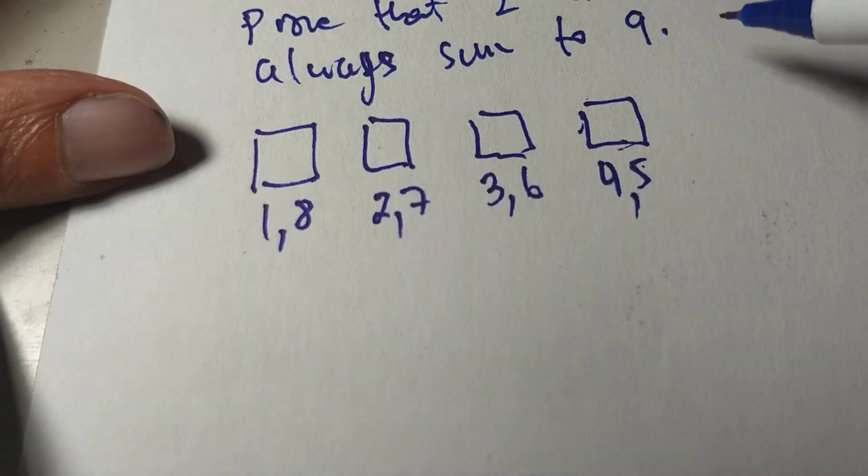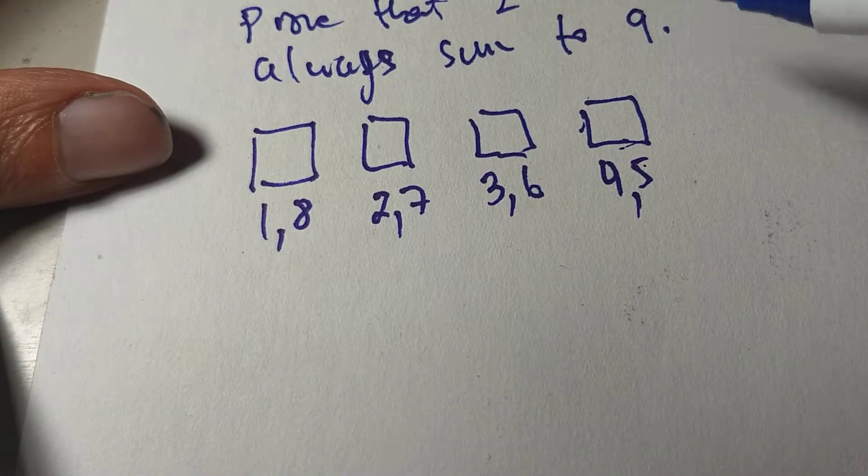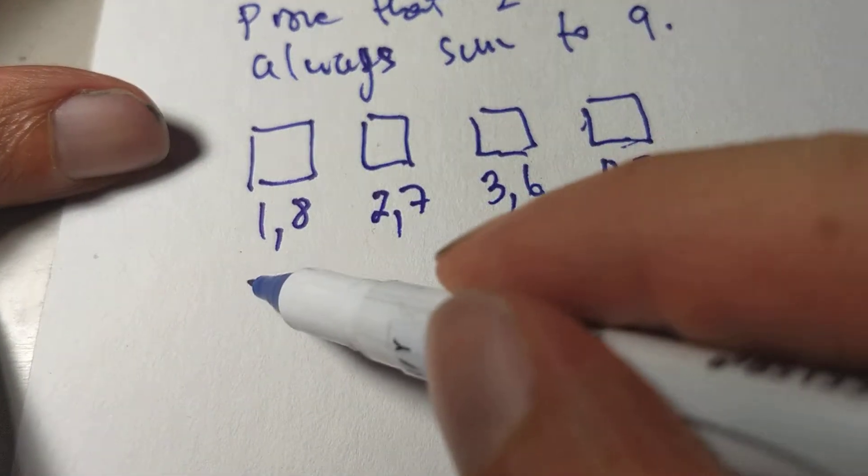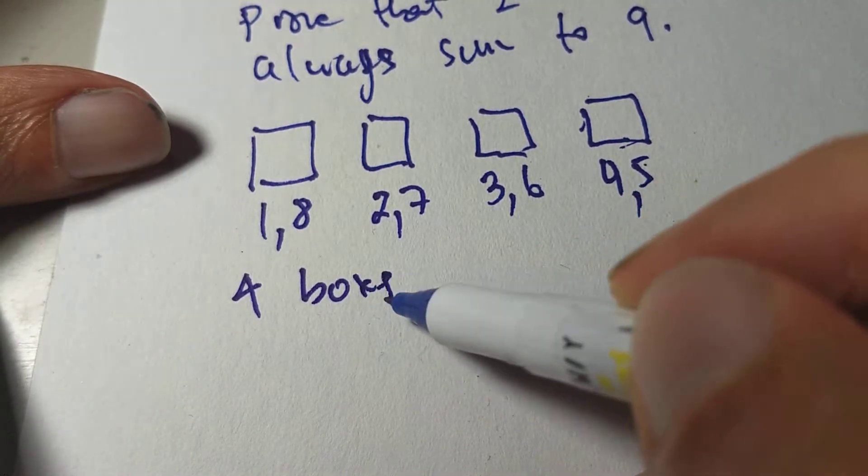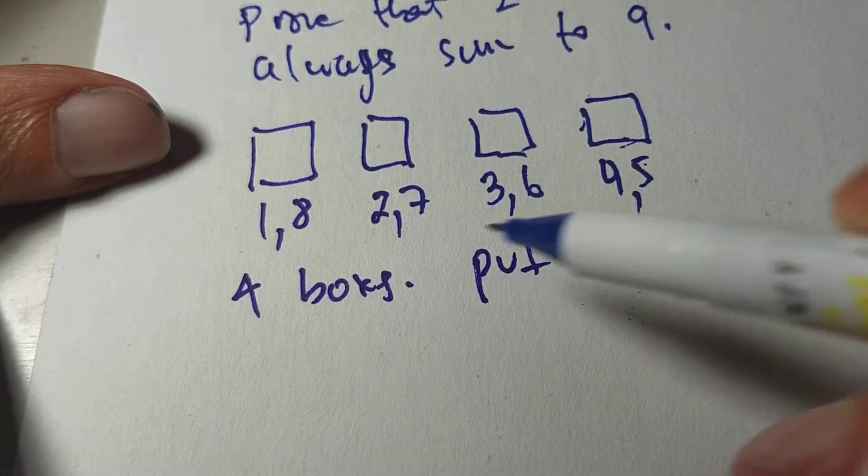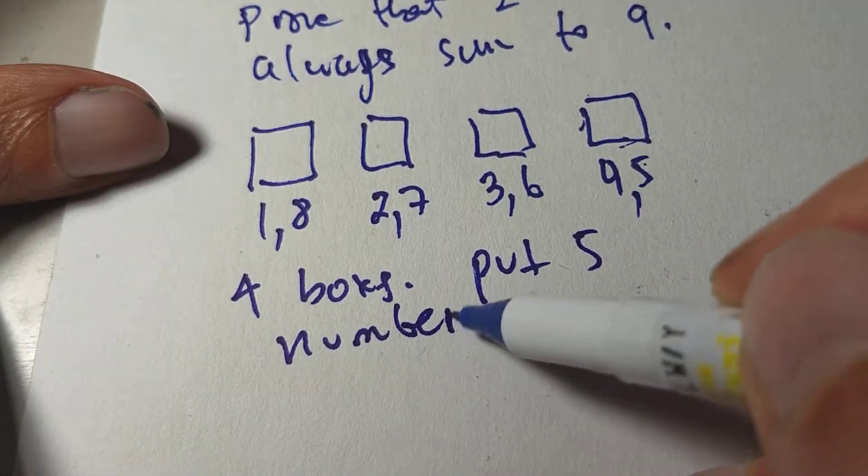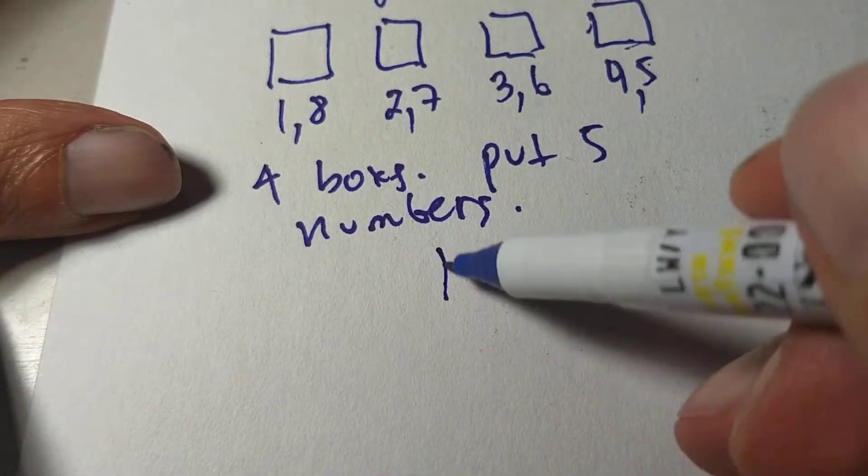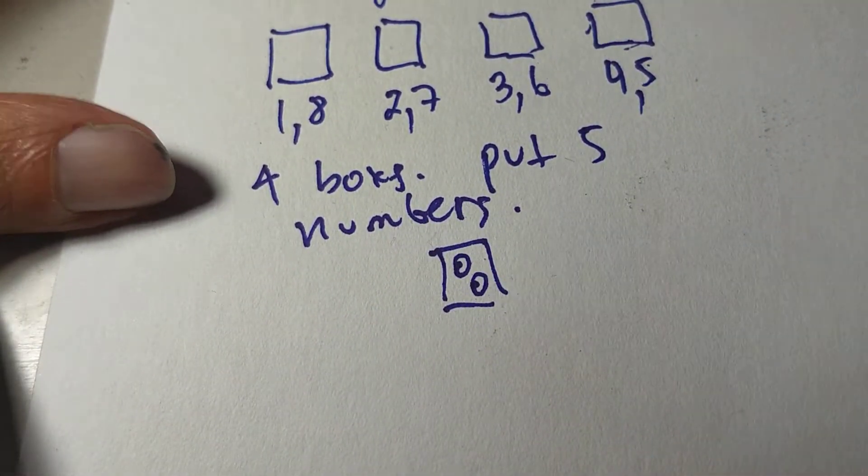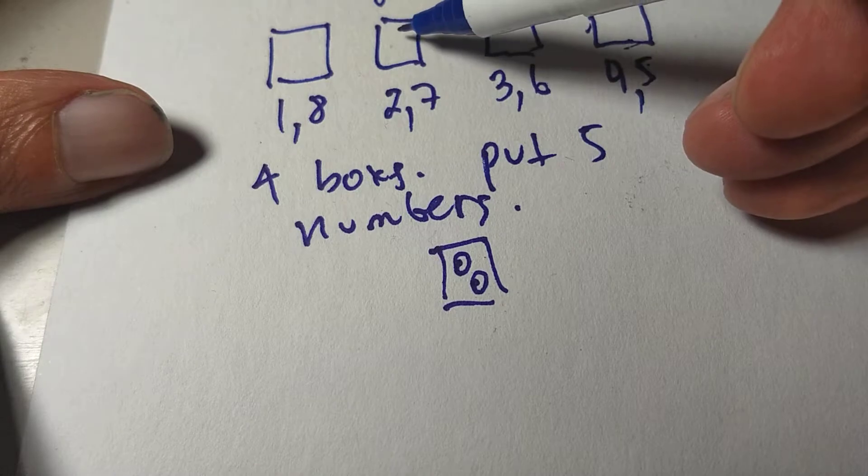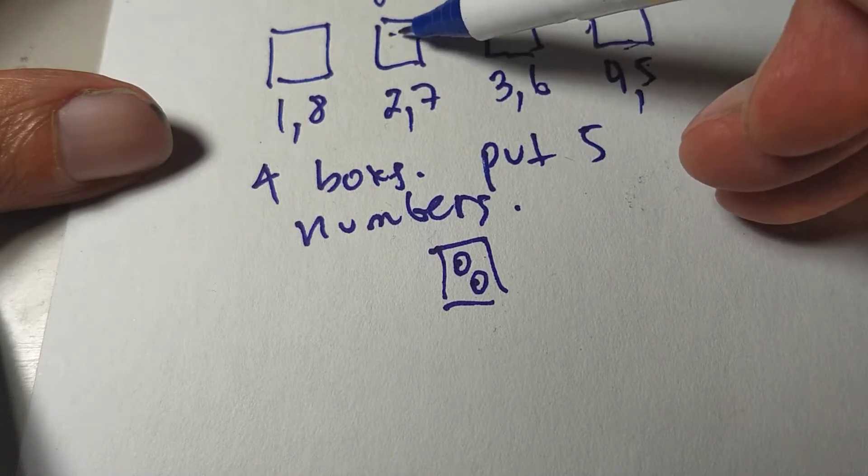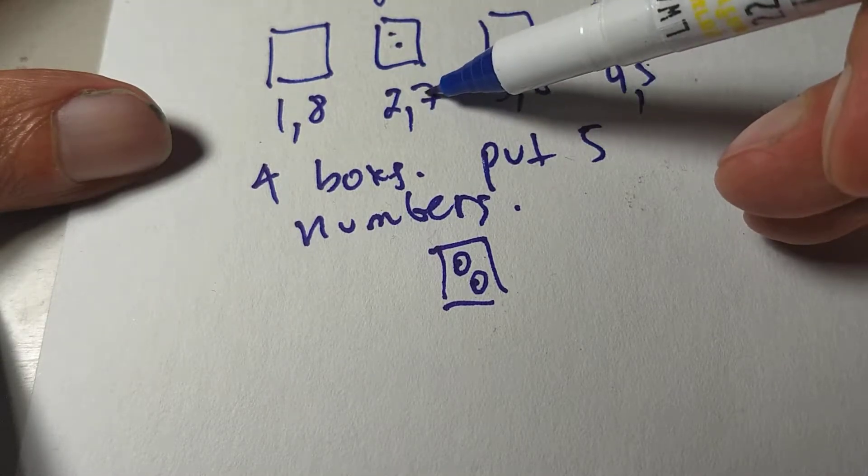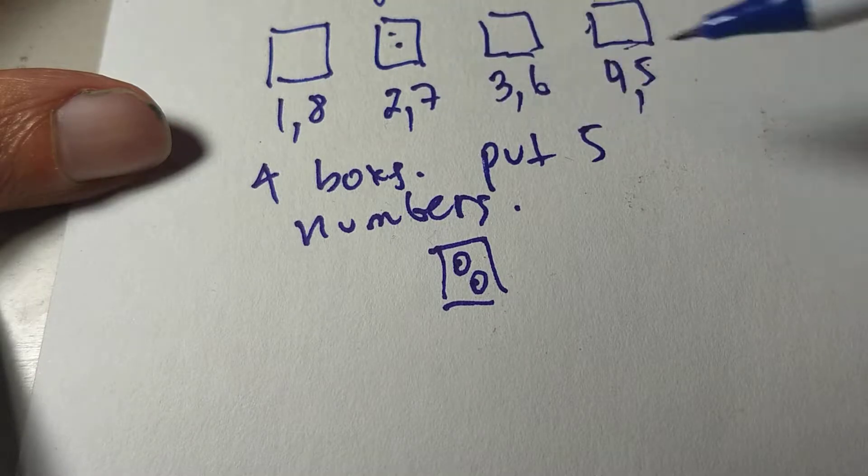So if I try to put five numbers into these boxes, I have four boxes, put five numbers. I'm going to have a box with two numbers. And if there's two numbers in this box, let's say here, then two plus seven is going to be nine.